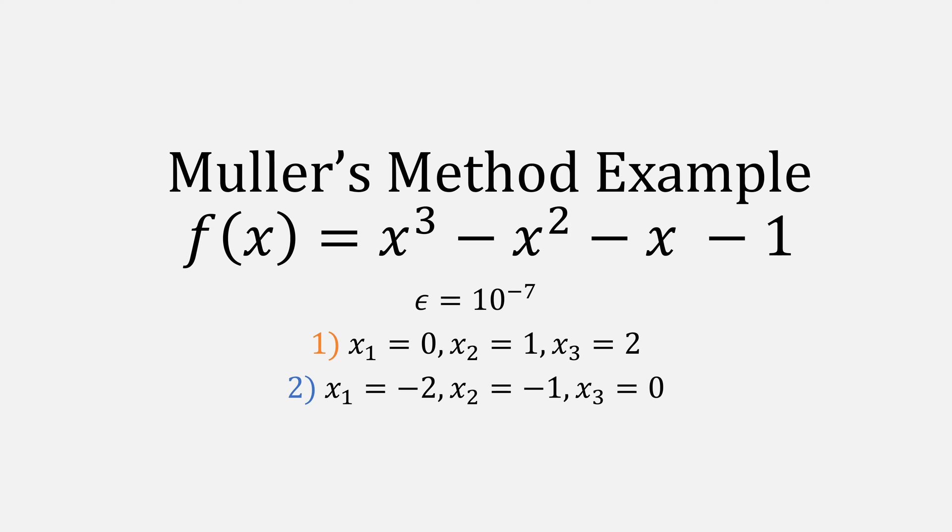Let's look at an example of Muller's method, which is x cubed minus x squared minus x minus 1. We'll use an epsilon of 10 to the minus 7th, and we'll test it twice, once with the starting points of 0, 1, and 2, and the second time with the starting points of negative 2, negative 1, and 0.